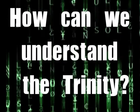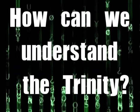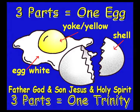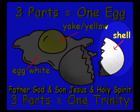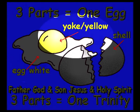How can we understand the Trinity? The egg helps us to understand the Trinity. With the egg, there are three different parts: there's the shell, there's the egg whites, and there's the yolk.